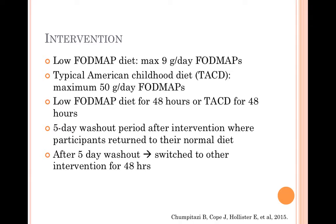The low FODMAP diet contained a maximum of 9 grams of FODMAPs per day, while the typical American childhood diet intervention contained a maximum of 50 grams of FODMAPs per day. Participants consumed one of the interventions for 48 hours, which was then followed by a 5-day washout period where the participants returned to their normal diet. Once the 5-day washout period was completed, participants then switched to the alternate intervention.